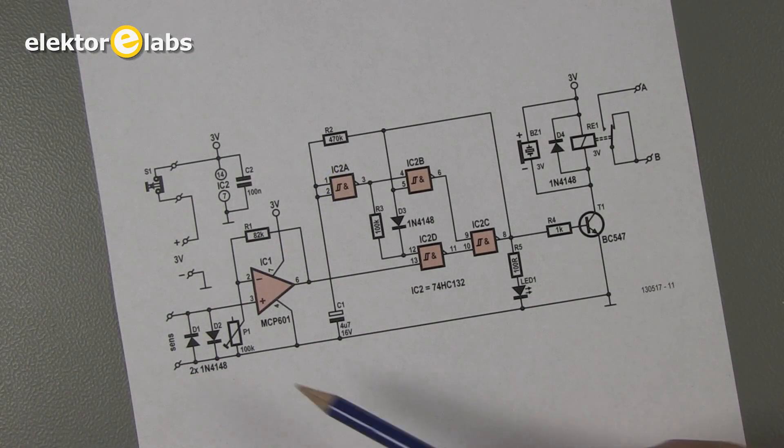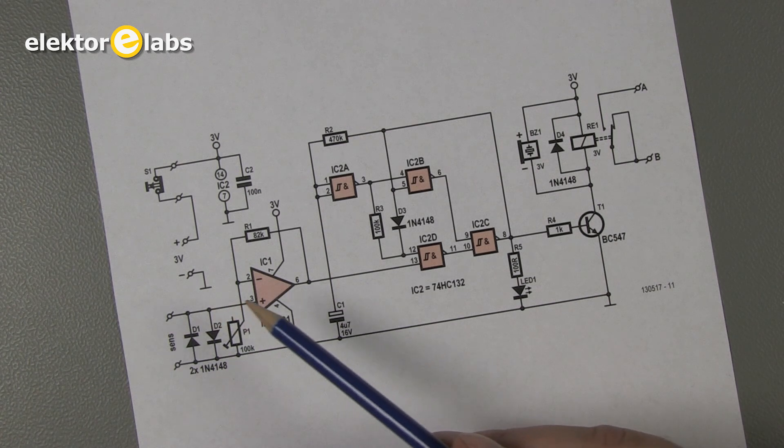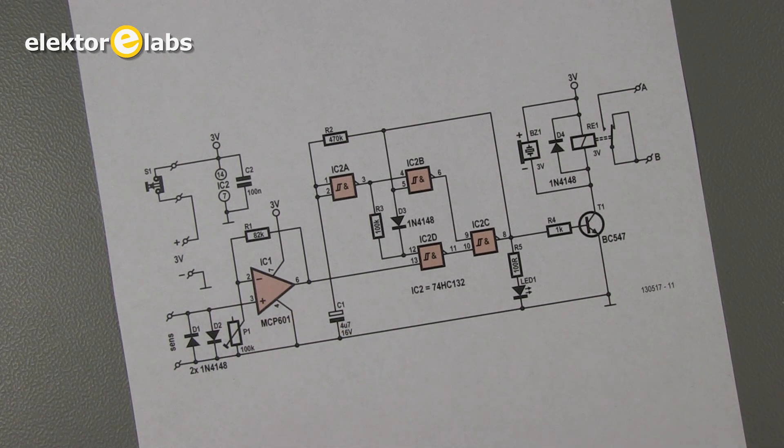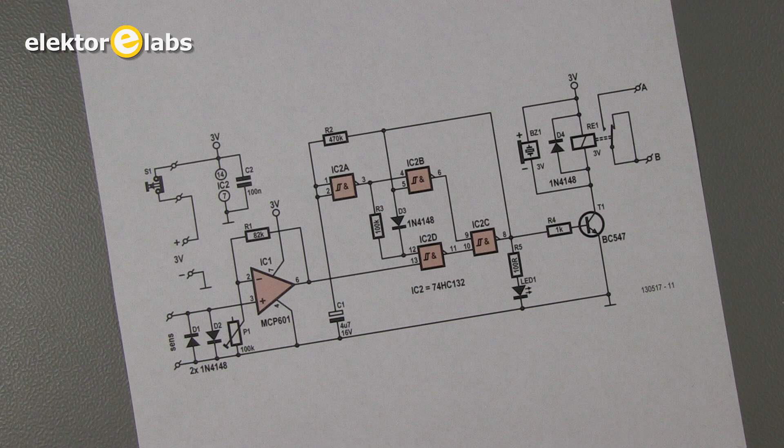The sensor is connected to the input of a type MCP601 op amp. This single supply op amp with rail to rail output can operate with a supply voltage as low as 2.7 volts.